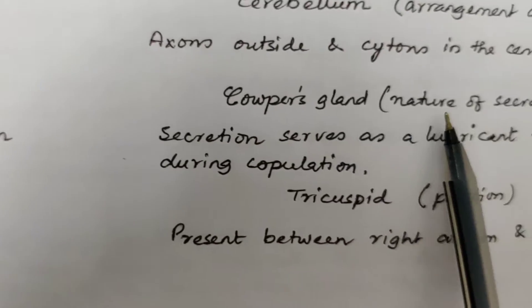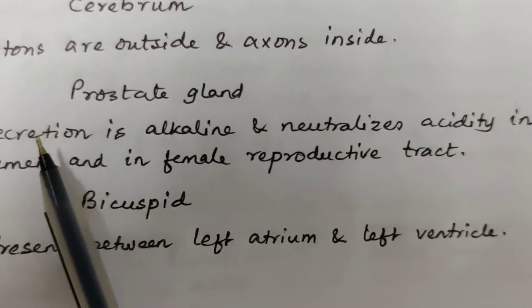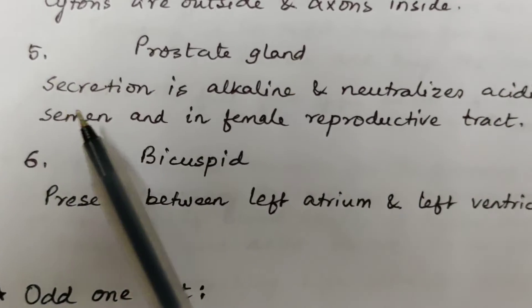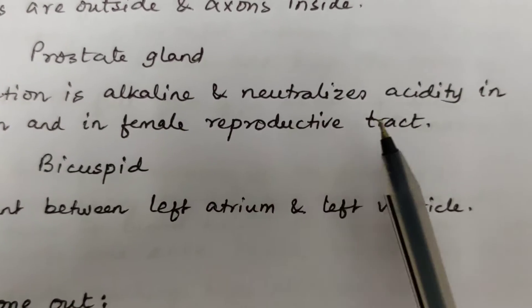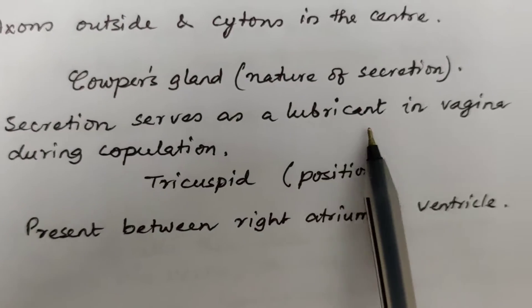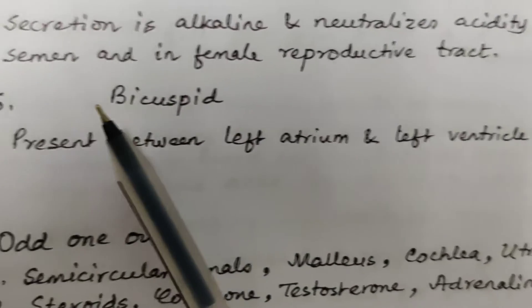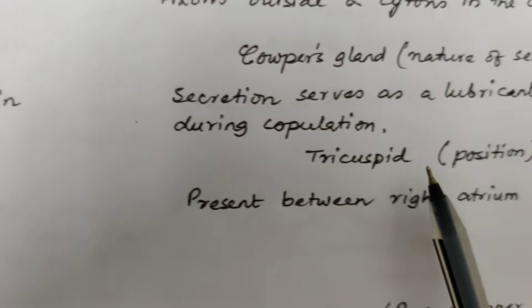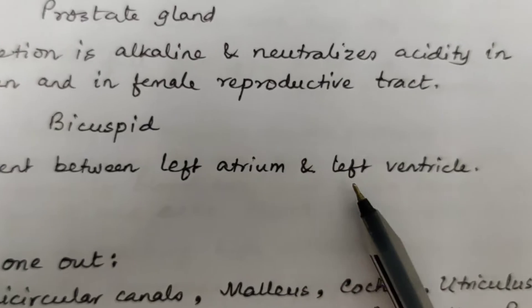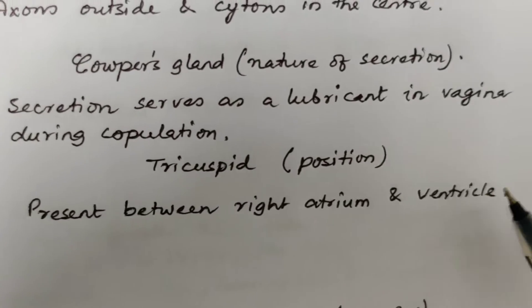Prostate gland and cowper's gland according to the nature of secretion: the prostate gland secretion is alkaline and neutralizes acidity in semen and in the female reproductive tract, whereas cowper's gland secretion serves as a lubricant in the vagina during copulation. The bicuspid valve is present between the left atrium and left ventricle, whereas the tricuspid valve is present between the right atrium and right ventricle.